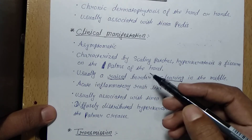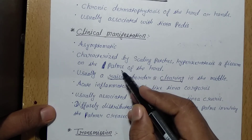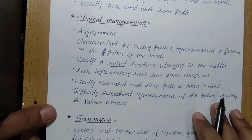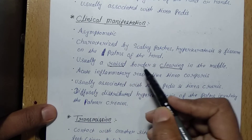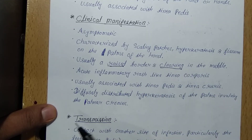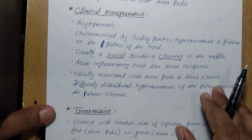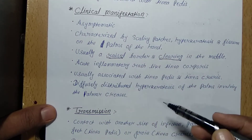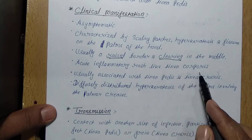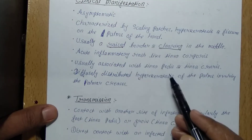In fissures, narrow or cracking openings are present on the palms. Tinea manuum usually has raised borders — the borders are enlarged or raised, and in the center the infection is clear. Acute inflammatory rashes are also present, similar to tinea corporis fungal infections.